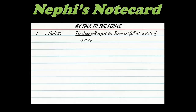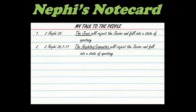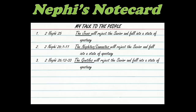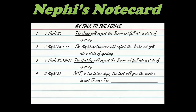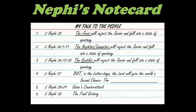Here's what I came up with for Nephi's note card: 2 Nephi 25 — the Jews will reject the Savior and fall into apostasy; 2 Nephi 25:1–11 and 26:12–33 — the Nephites, Lamanites, and Gentiles will also reject the Savior and fall into apostasy. Nephi explains that all three groups are going to fall into what we call the Great Apostasy. At this point in his talk, you might throw up your hands in despair.